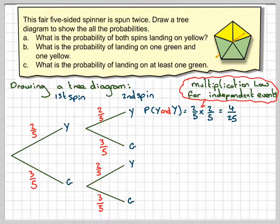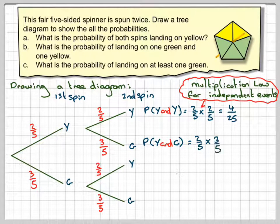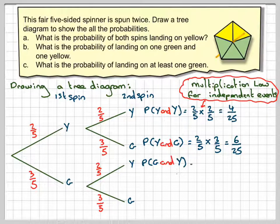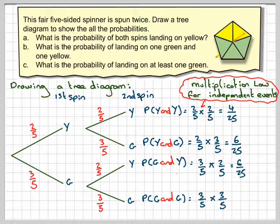The probability of getting a yellow on the first and a green on the second is two fifths times three fifths, which gives me six out of 25. Similarly, the probability of getting a green on the first and a yellow on the second is three fifths times two fifths, which is also six out of 25. And the probability of getting a green on the first and green on the second is three fifths times three fifths, which equals nine twenty-fifths.